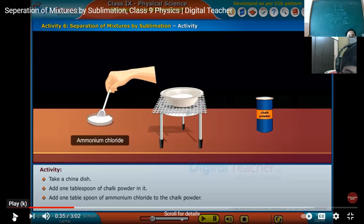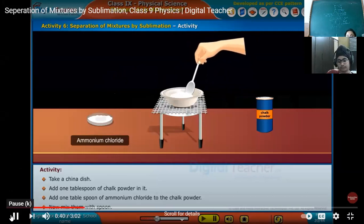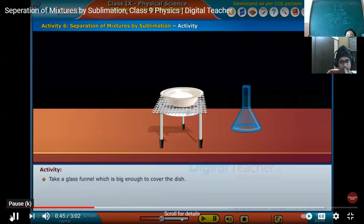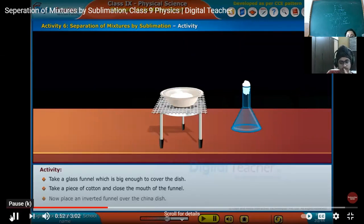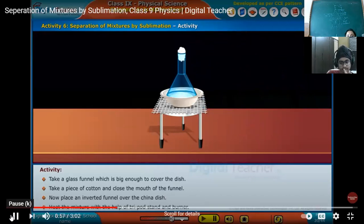So we are continuing with the video. They are separating ammonium chloride with the chalk powder. Yes, we can also do it as chalk powder is not a sublimate. Add to the chalk powder. Now mix them with spoon. Take a glass funnel which is big enough to cover the dish. Take a piece of cotton and close the mouth of the funnel.